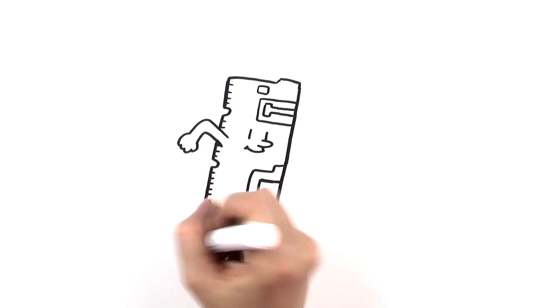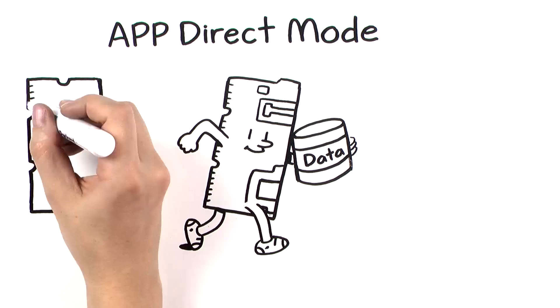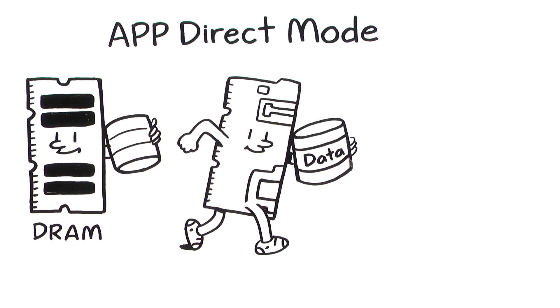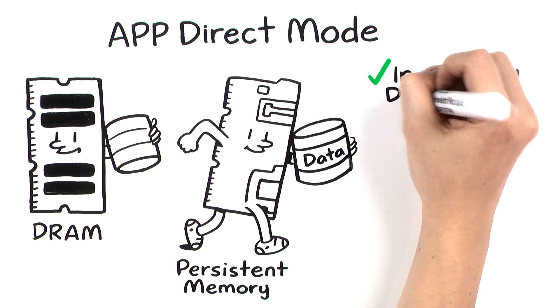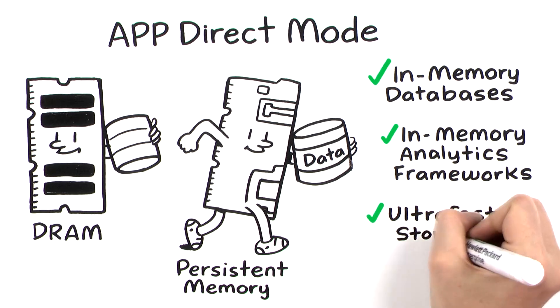HPE persistent memory can also be configured for app direct mode. In this mode, data that doesn't need permanent storage can be executed on DRAM, while data that needs to be persistent will be routed to HPE persistent memory. This mode is perfect for in-memory databases, in-memory analytics frameworks, and ultra-fast storage applications.